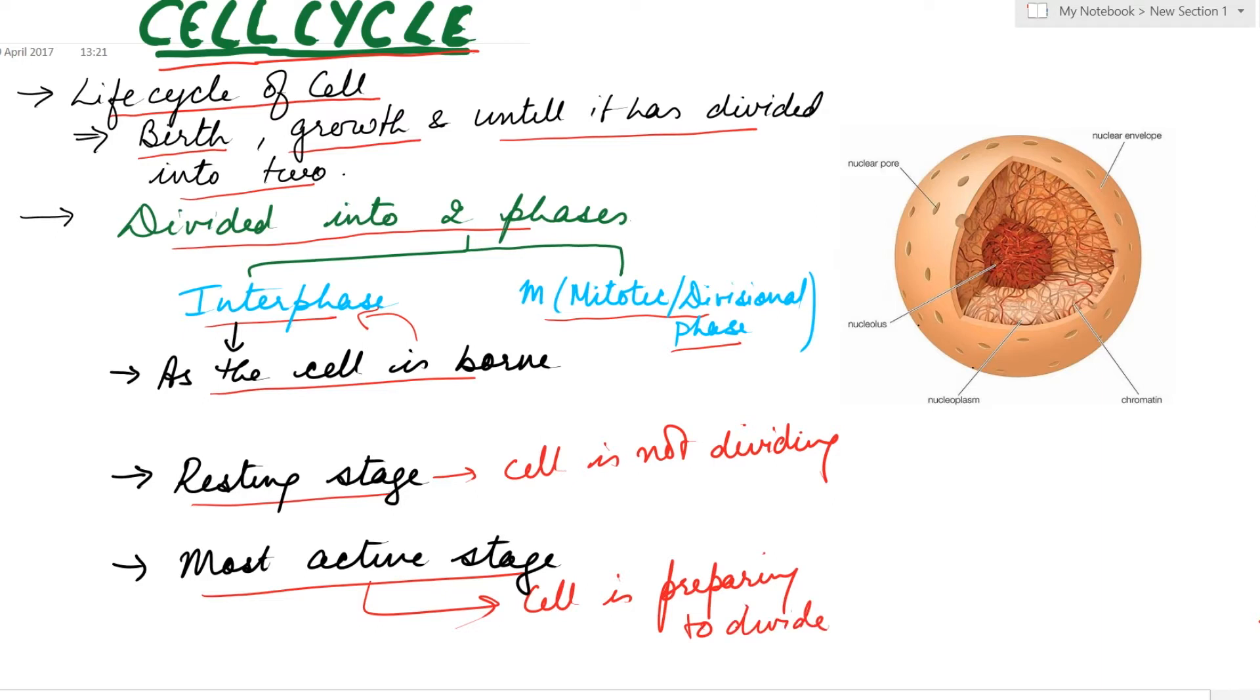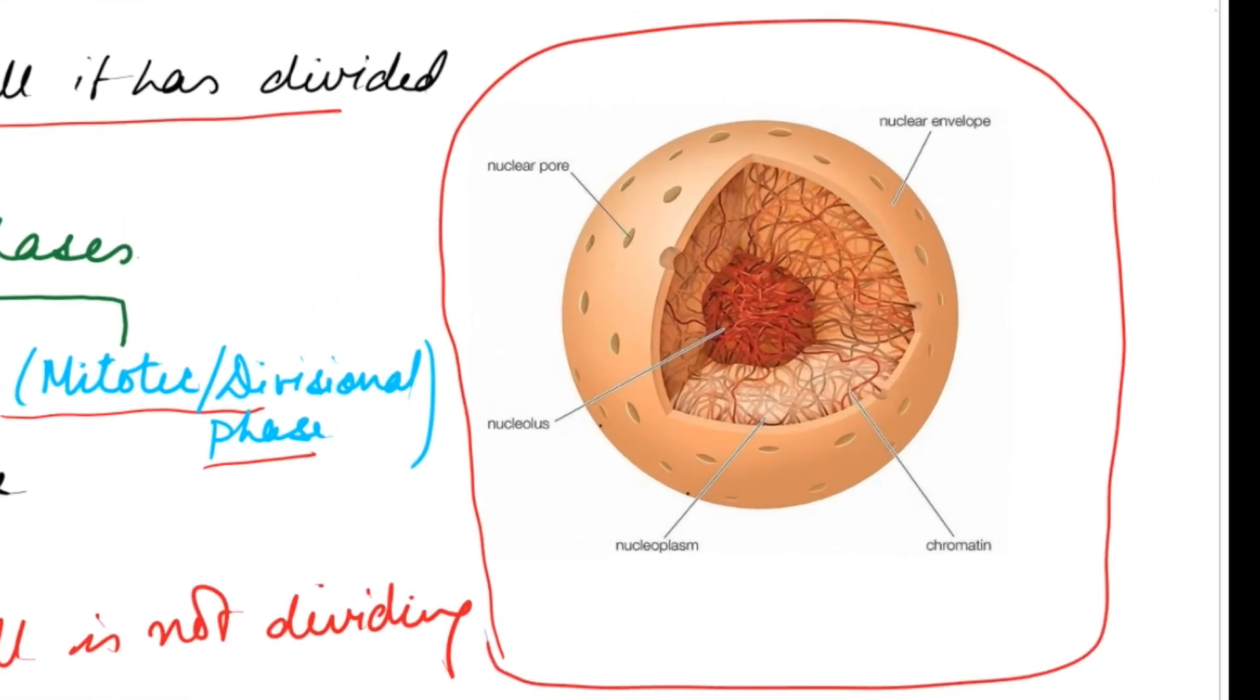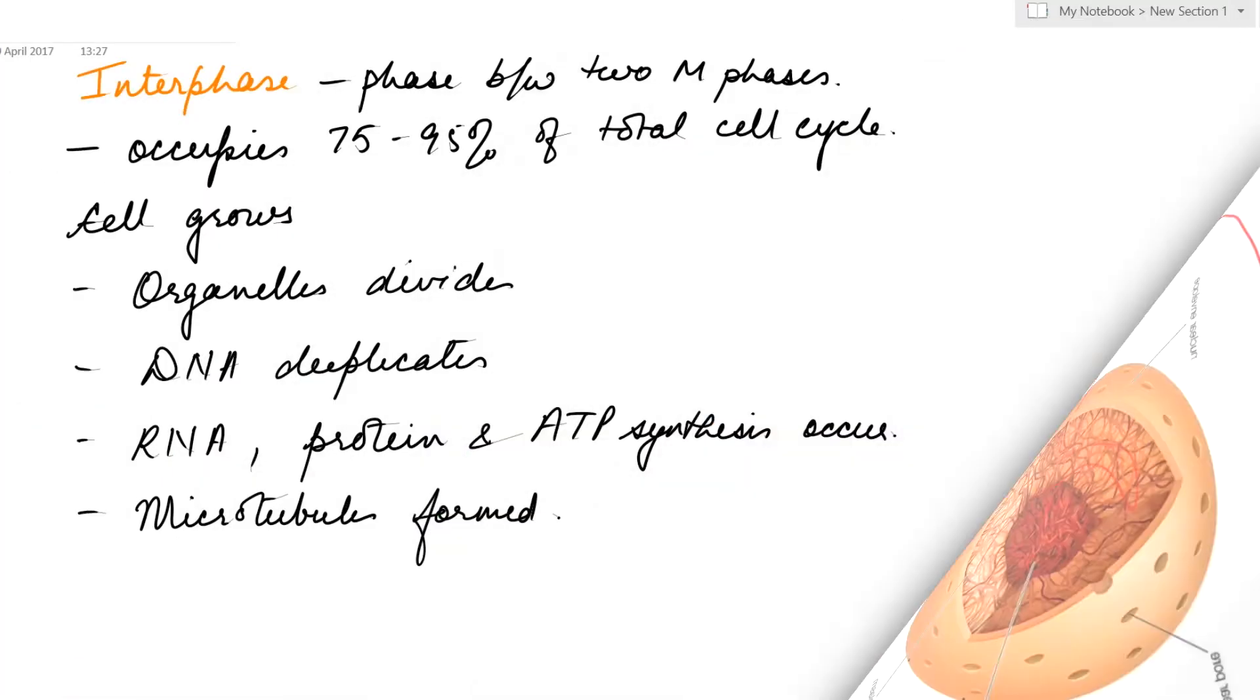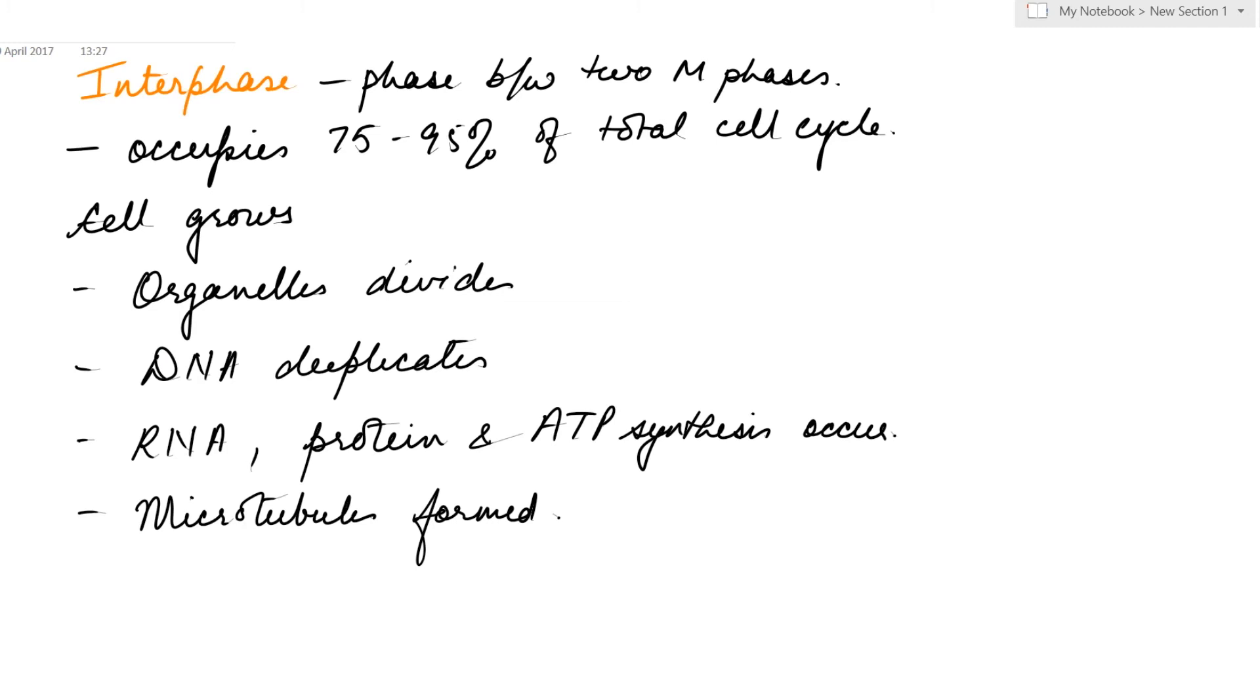During the interphase, a very defined nucleus can be seen which has the nuclear membrane, nucleolus, and the chromatin reticulum. Interphase is the phase between two divisional or M phases. It occupies 75 to 95 percent of the total cycle. During this stage, the cell grows, all its organelles divide, DNA duplicates, RNA protein ATP synthesis occurs, and the microtubules are formed.